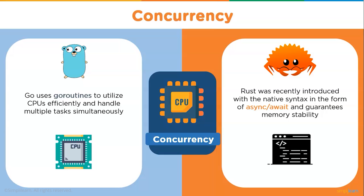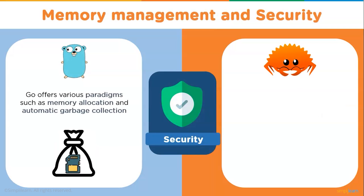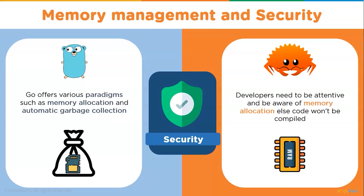Now we'll compare the two on memory management and security. Go and Rust both practice safe access and memory management with different approaches, making them choices for cloud computing. Go offers paradigms such as memory allocation and automatic garbage collection to handle possible threats. Go gets automated during runtime, so developers don't need to manually assign or remove memory.